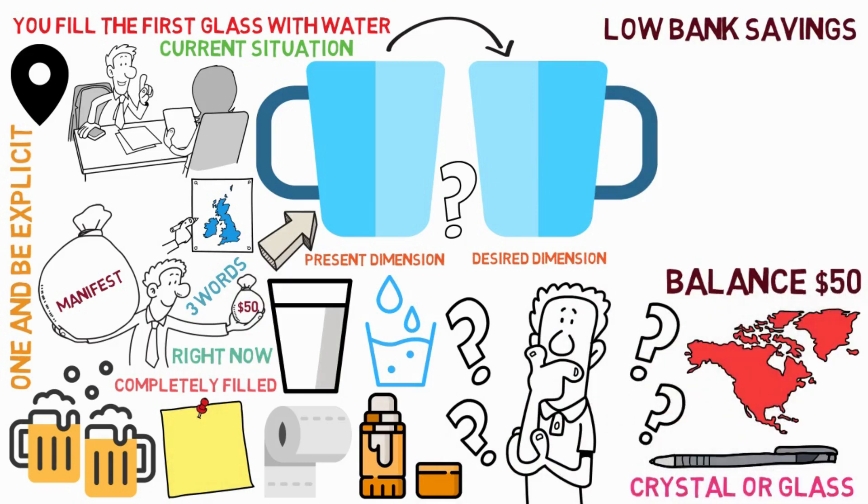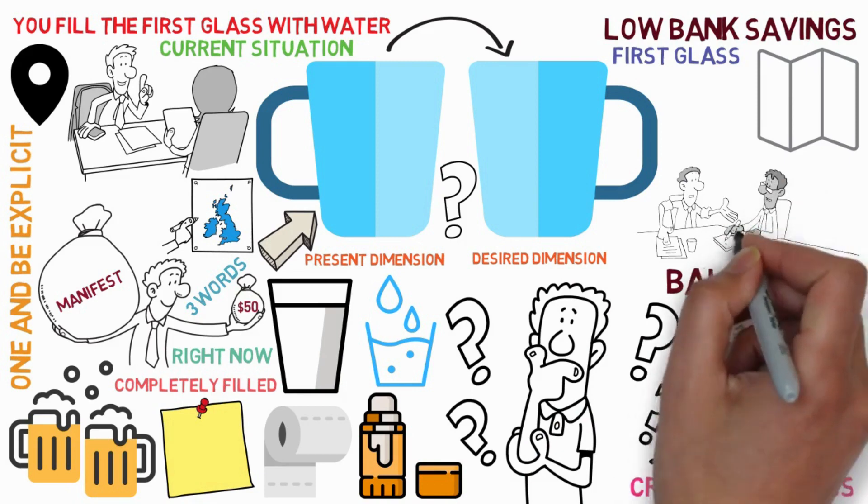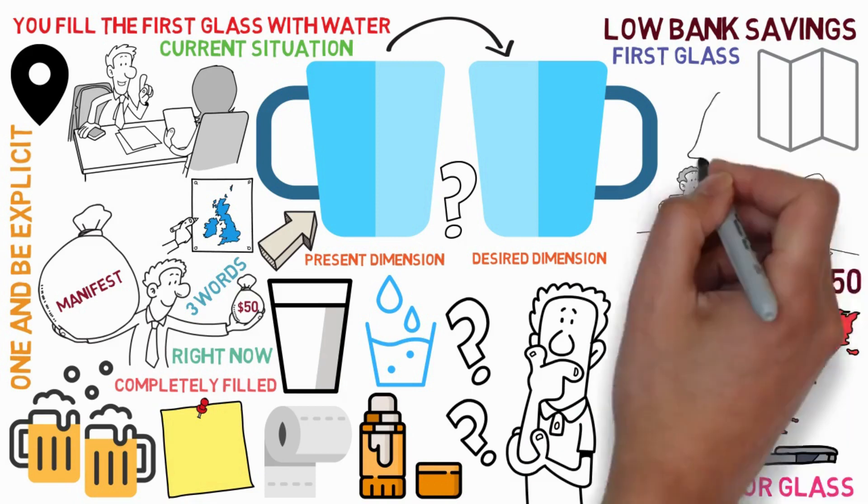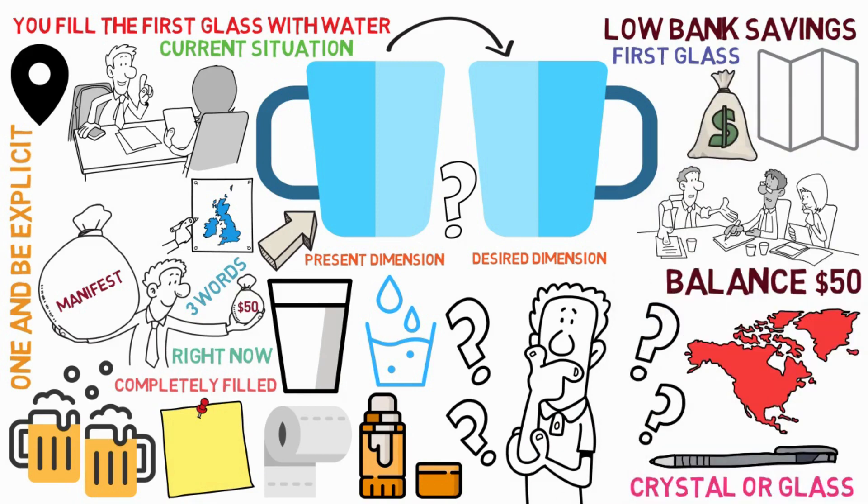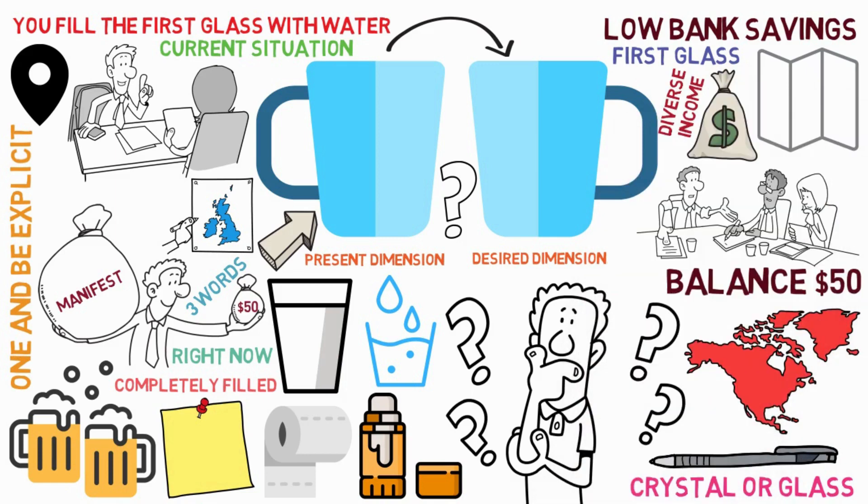Then, you take that piece of paper, and place it on the first glass allocated for your current state. Then, take out another piece of paper, or a notebook, and write out your desired state. Given your limited bank savings, your desired state could be diverse income, or balance $1,000. Now, you take that paper and stick it on the new glass, where you want the desired state.